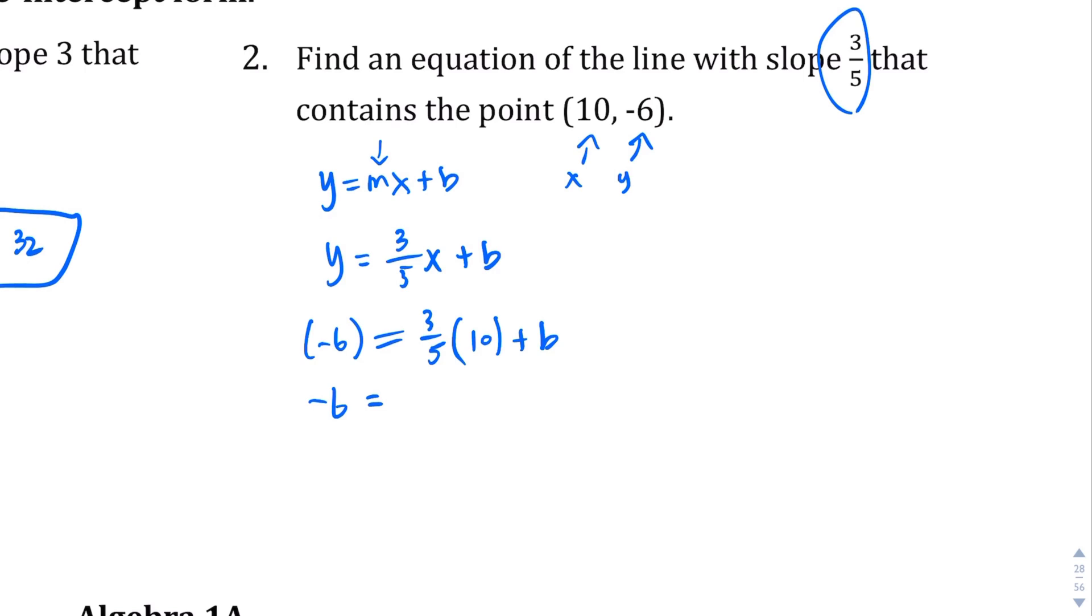Negative 6 equals 3 over 5 times 10 is going to be, there's a couple ways to do this, I'm just going to multiply the numerators together, which are the 3 and the 10, so that's 30 over 5 plus b. And then we can actually simplify 30 over 5, right? 30 can be divided by 5 six times, so this can actually be rewritten as 6. And then we want to isolate that b, we want to get it by itself, so we've got to move this guy over here by doing the opposite. We're going to subtract 6, and that way this goes away. And negative 6 plus negative 6 is negative 12 equals b, so we found our y-intercept there. And then, let's just plug it back in here. y equals 3 over 5x, and we found out our b was negative 12, so I'm just going to put minus 12.